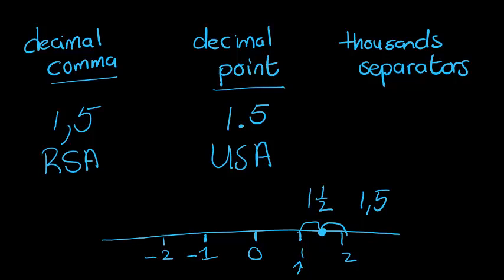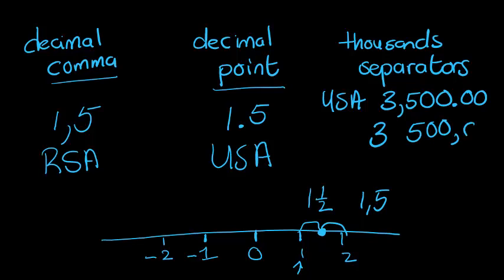What do we mean about the thousands separator? When we write a number that is bigger than a thousand, let's say we're writing the number 3,500. There are two different ways of writing it. In the USA, they would write the number 3,500, and if we were to put the decimal there, the decimal would be 0.00. If we were to write the same number in South Africa, we would write it as 3 space 500 comma 00.